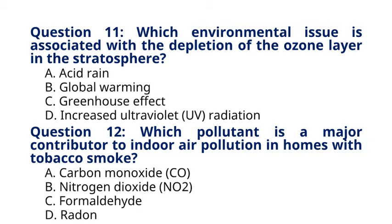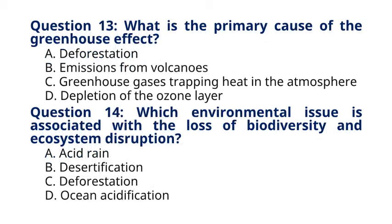Question 13. What is the primary cause of the greenhouse effect? A. Deforestation. B. Emissions from volcanoes. C. Greenhouse gases trapping heat in the atmosphere. D. Depletion of the ozone layer. The correct answer to question 13 is option C. Greenhouse gases trapping heat in the atmosphere. Explanation: the greenhouse effect is primarily caused by certain gases in the Earth's atmosphere, known as greenhouse gases, trapping heat radiated from the Earth's surface, leading to warming of the planet's climate.